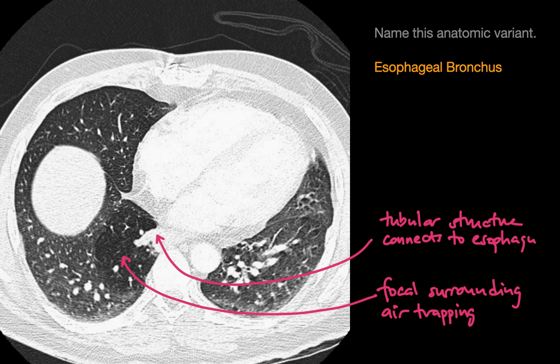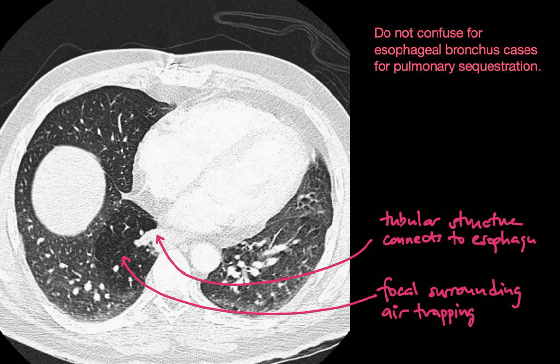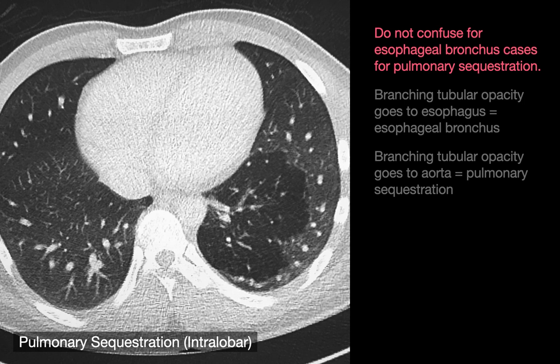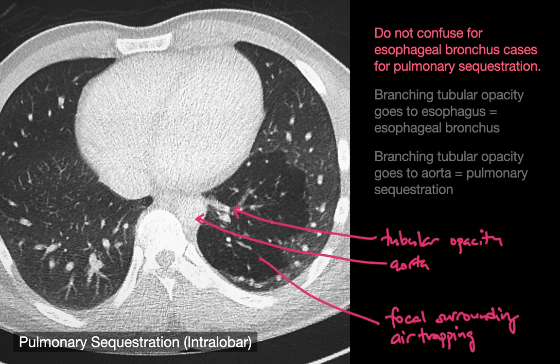It's important not to confuse esophageal bronchial cases with a pulmonary sequestration, which can look similar at first glance. In the case of an esophageal bronchus, we have a region of air-trapping with a tubular bronchial opacity that goes to the esophagus. With an intralobar pulmonary sequestration, you also have a region of air-trapping, but the tubular opacity doesn't go to the esophagus — it goes to the aorta. You can see how the two can look somewhat similar.